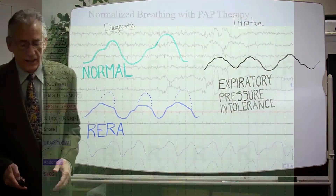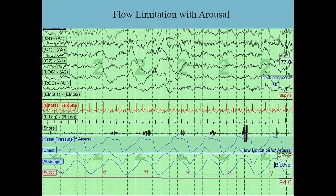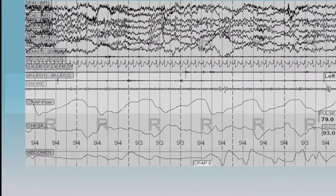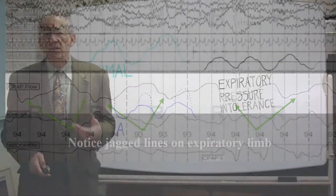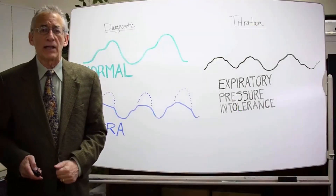As you can see on these next three slides: this is our normal breathing curve, this is an example of flow limitation with snoring, and this is the example of what happens when you try to treat RERAs with CPAP — often you get expiratory pressure intolerance. This is a sign of both subjective and objective discomfort.